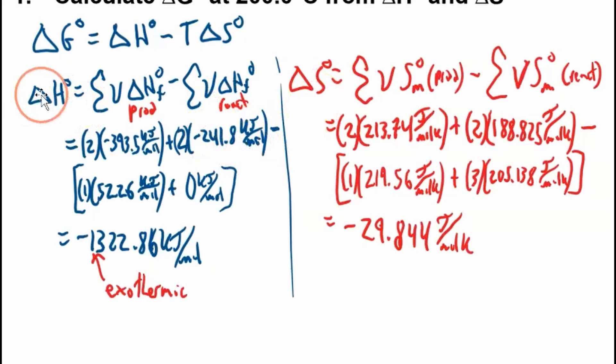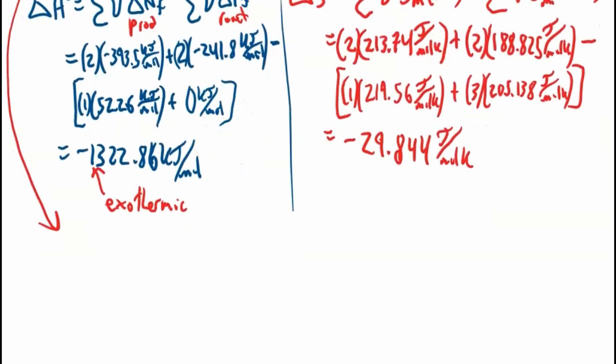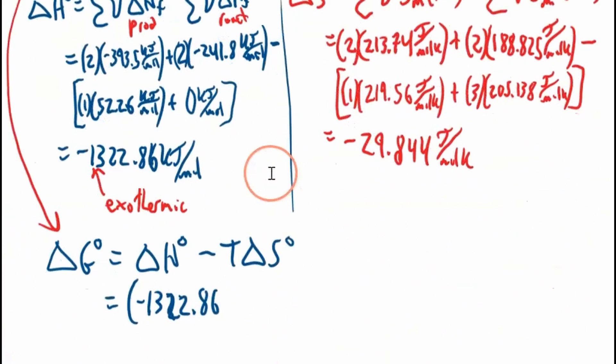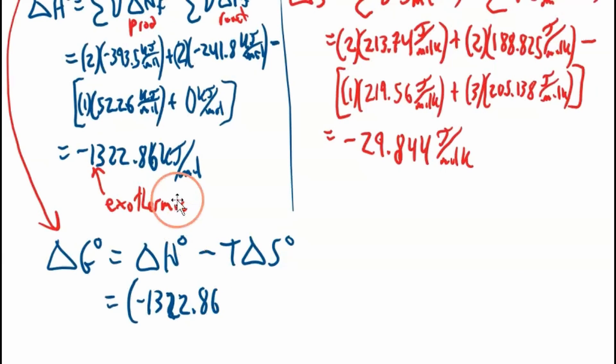Now that we got our reaction enthalpy and reaction entropy, we can plug it into this equation and we're done. So the change in the Gibbs energy is equal to ΔH°. It's good to just write it out again, good housekeeping for your prof. Before we proceed, this is in kilojoules and this is in joules, so what we should do is go to the same unit. Usually this is in kilojoules, so I'm going to keep it in kilojoules.